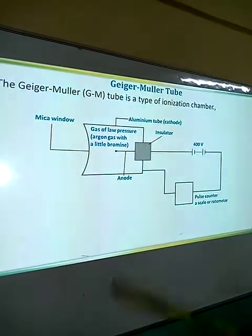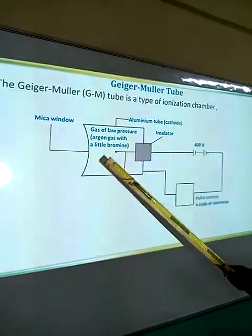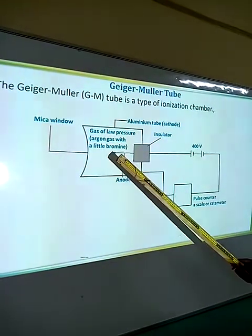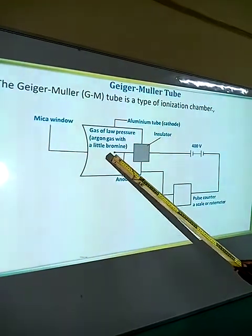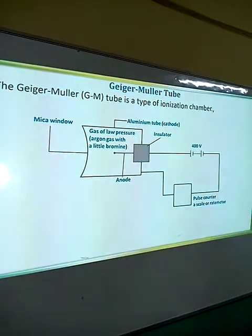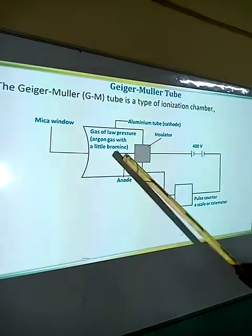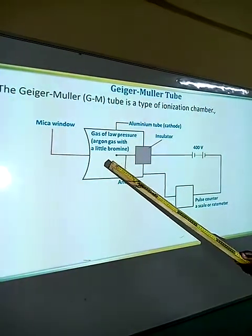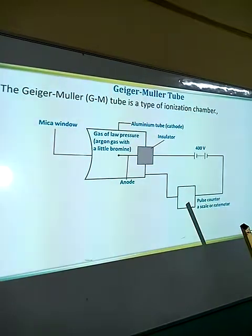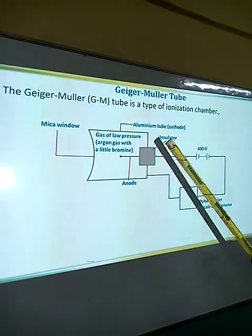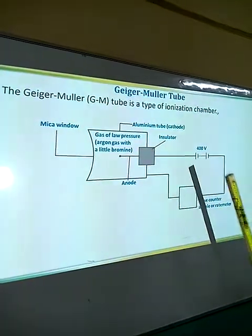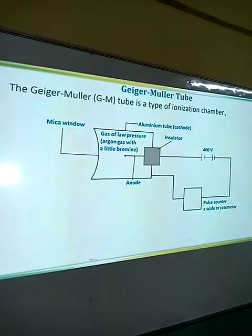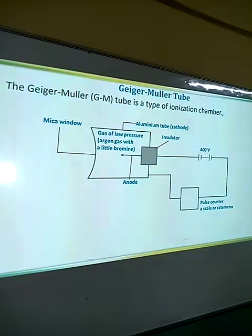The moment a radioactive particle enters the tube, it will ionize argon gas. The argon gas is at very low pressure. The ionization will create collisions which further create small particles or ions.